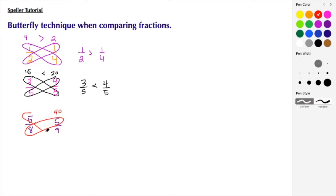I'm going to cross multiply, 8 times 5 to give us 40, and then 9 times 5 to give us 45.